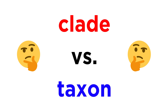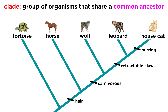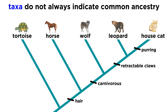There is indeed an important distinction between the terms clade and taxon. A clade is a group of organisms that share a common ancestor, like the family Phylidae in the cladogram we are familiar with. Taxa, meanwhile, do not always indicate common ancestry.